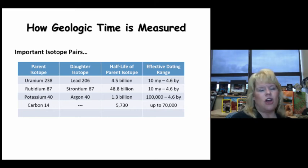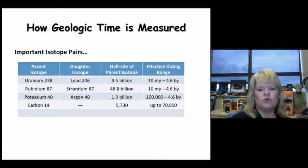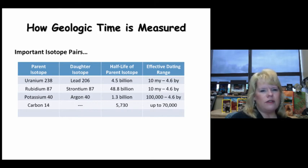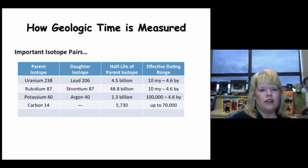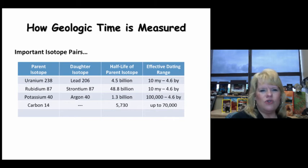Potassium-40 to argon-40 is very commonly used, with a half-life of 1.3 billion years. It dates rocks really well from about 100,000 years old up to 4.6 billion years of age. Carbon-14 is completely different — it's organic, so it just decays until there's none left. Its half-life is approximately 5,730 years, which means it can't really be used for anything older than 70,000 years.